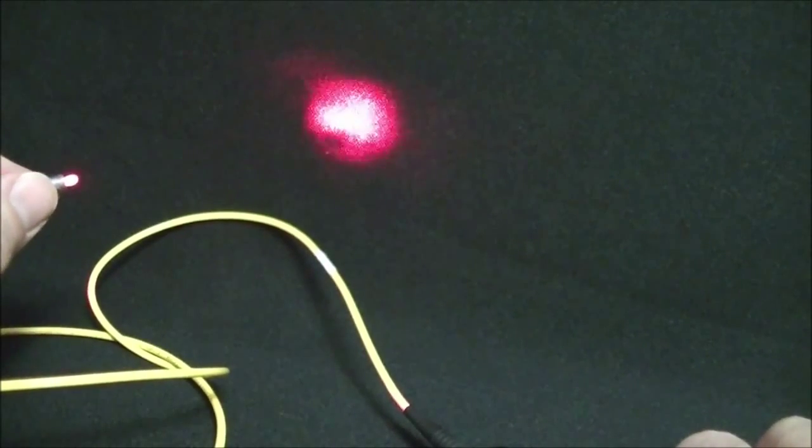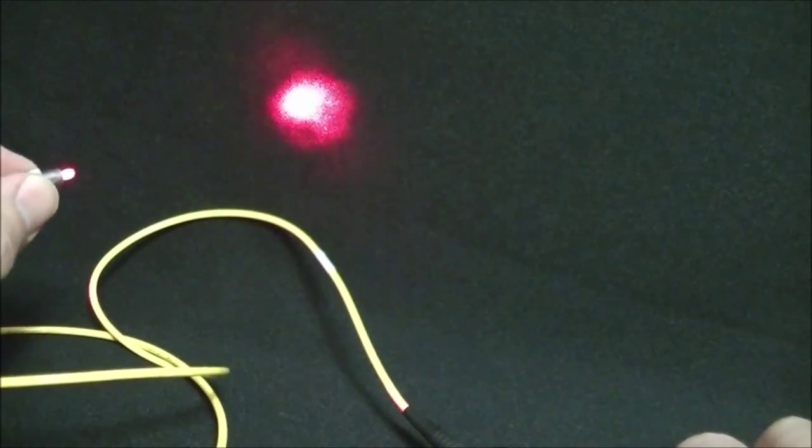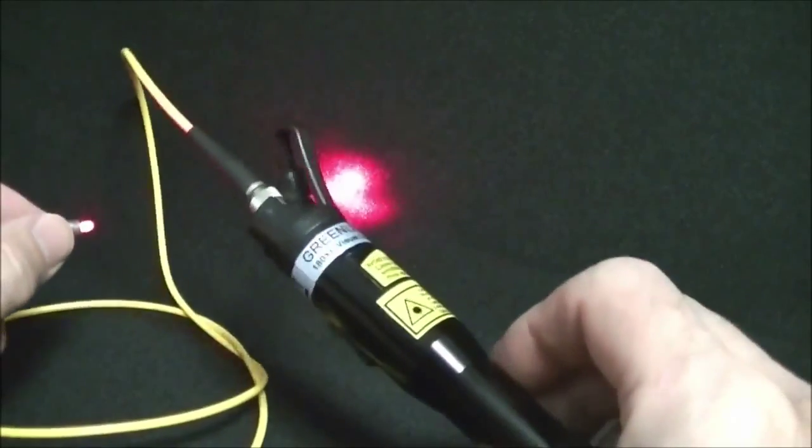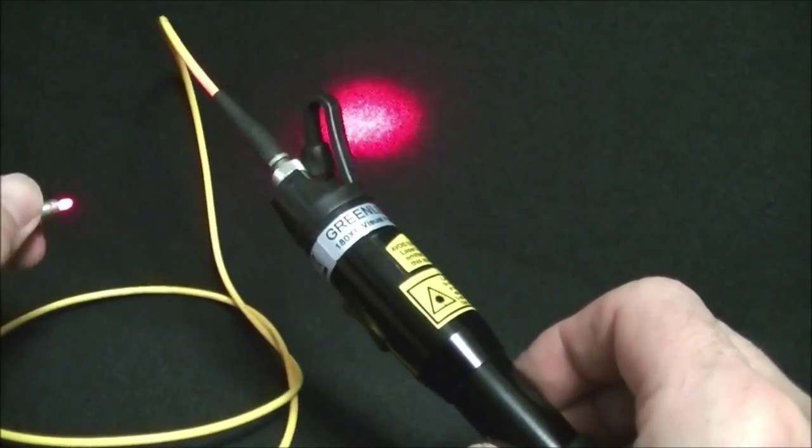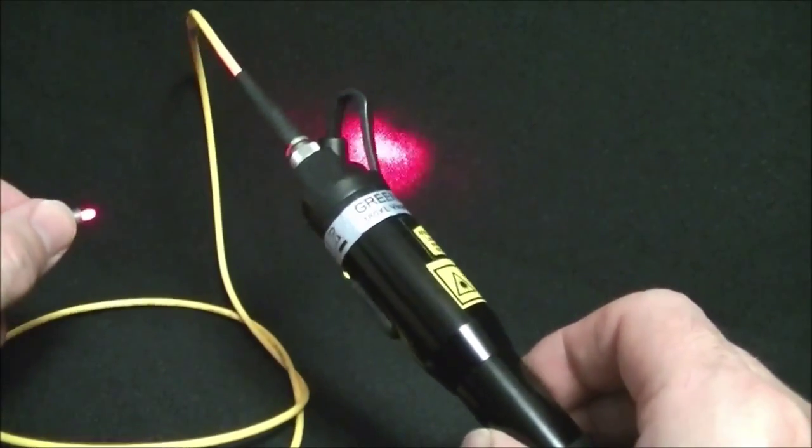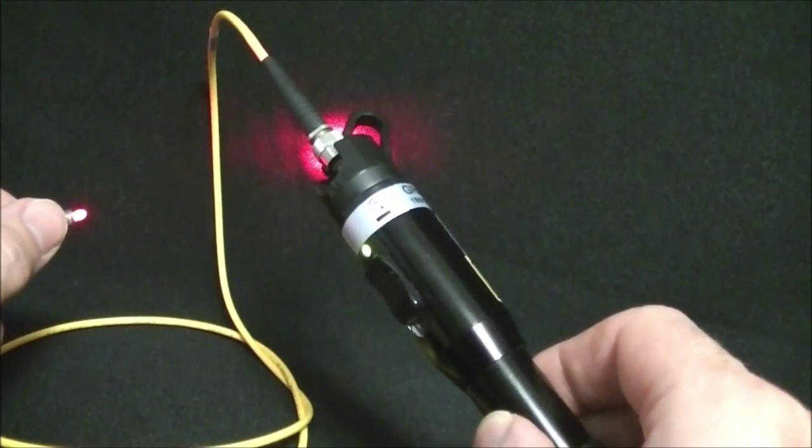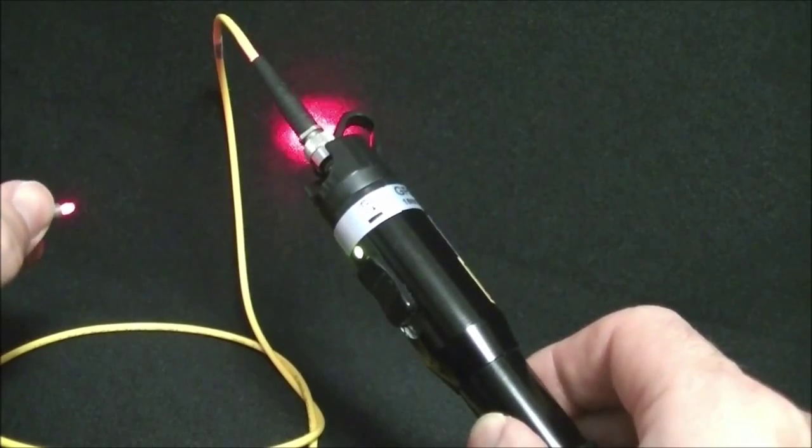One word of note is to make sure that you don't look at the end of the fiber directly. Although the 180XL does have a limitation of 0 dBm, you want to make sure that you don't look at the fiber directly. 0 dBm is the safe level for class 2 operation as defined by the FDA.